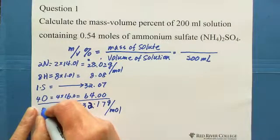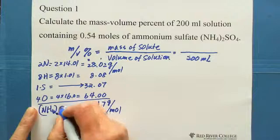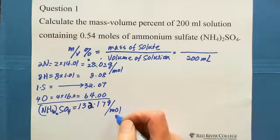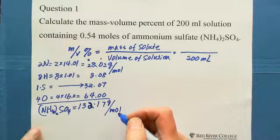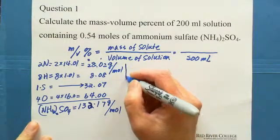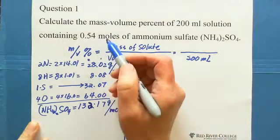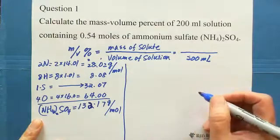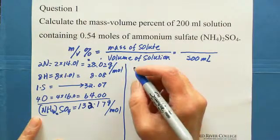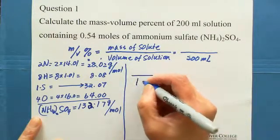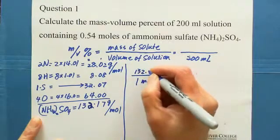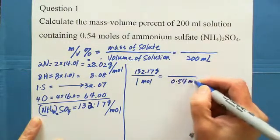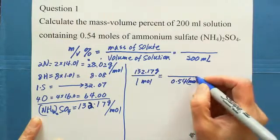So one mole of (NH4)2SO4 has a molar mass of 132.17 grams per mole. In this question we have 0.54 moles. We set up a ratio proportion: 1 mole is 132.17 grams — what is 0.54 moles in grams?